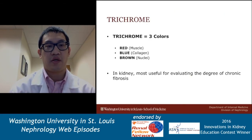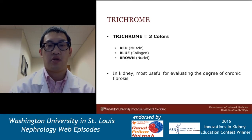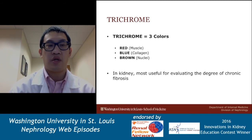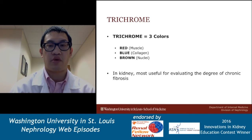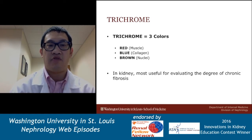The trichrome is next. It's called trichrome because it's three colors: red, which stains muscle; blue, which stains for collagen; and brown, which stains for nuclei. Oftentimes in the trichrome you'll see a red piece of tissue — that's just a little bit of skeletal tissue obtained on the way to the kidney biopsy. The blue is what stains collagen, and that's really important because the trichrome in the kidney biopsy is most used for evaluating the degree of chronic fibrosis. If you have a lot of irreversible chronic disease, there will be a lot of fibrosis, a lot of collagen, and a lot of blue.